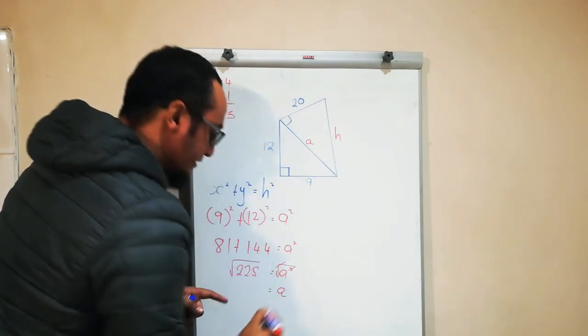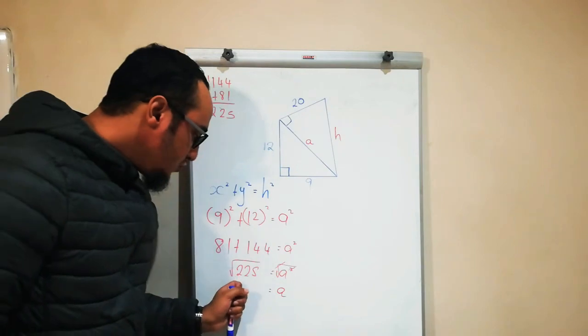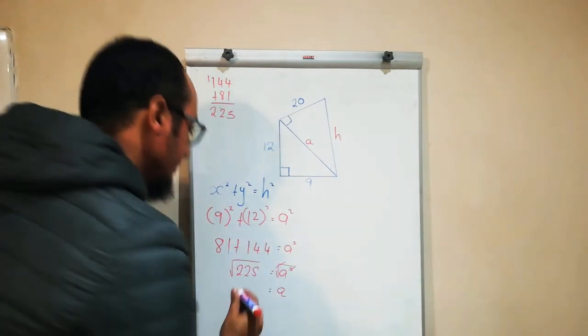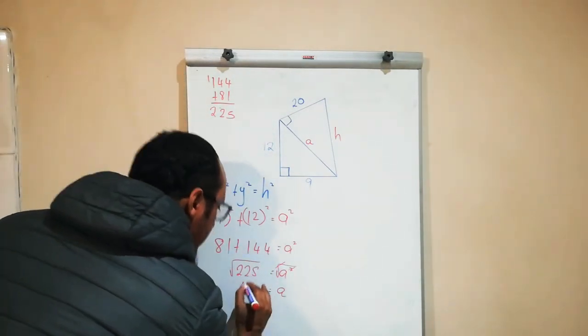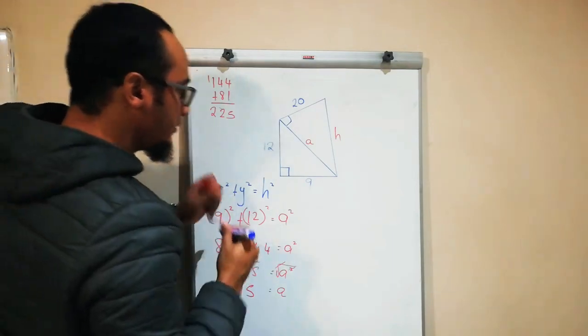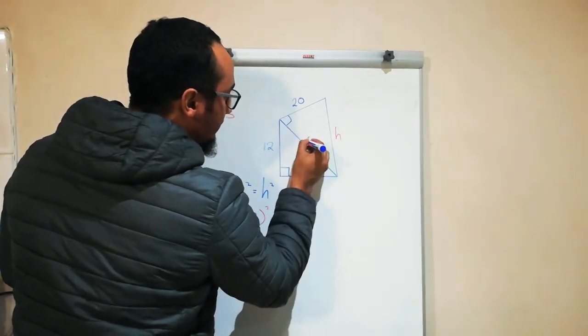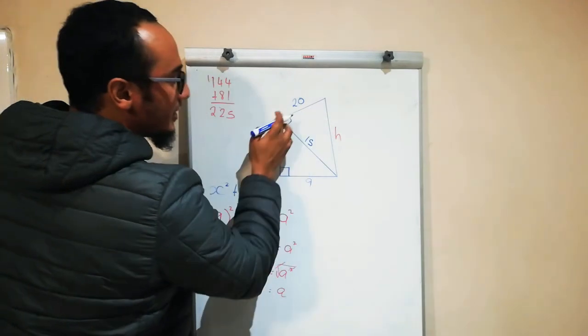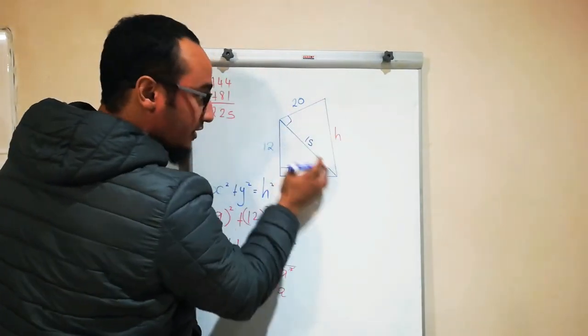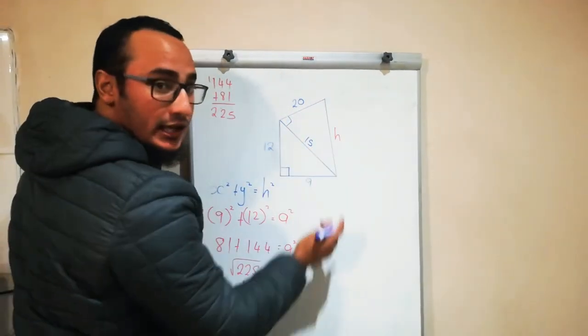So the square root of 225 equals 15. I substitute my value—a equals 15. Now notice this triangle over here now has the value of a, meaning I only need one more value and I substitute.